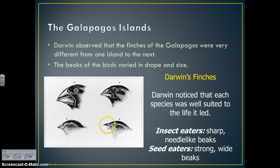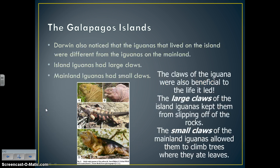Birds with sharp needle-like beaks ate insects, because that's what was available in their environment. Finches on islands with seeds had big, strong, wide beaks. He also observed that island iguanas had large claws which helped them keep from slipping off rocks, while mainland iguanas had small claws which allowed them to climb trees and eat leaves.